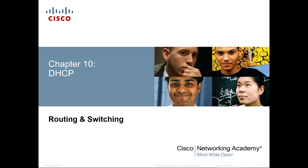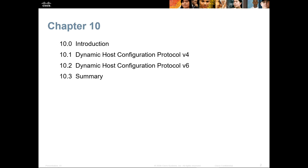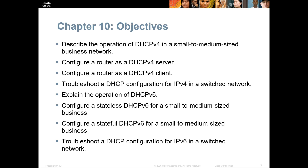Welcome — this is Routing and Switching Essentials Chapter 10, specifically covering DHCP, or Dynamic Host Configuration Protocol. We're going to talk about basic DHCP, DHCP version 4, and DHCP version 6, ending with a summary. The objectives are to implement DHCP — client, server, and basic configuration for all appropriate versions. DHCPv4 is specifically for IPv4, and DHCPv6 is for IPv6.